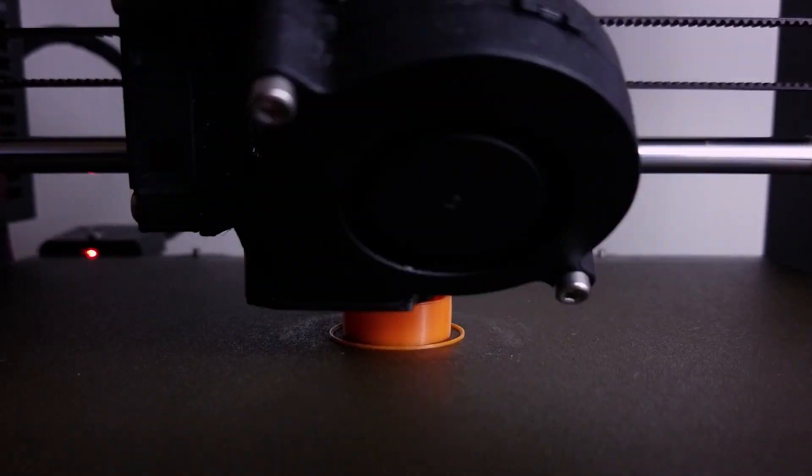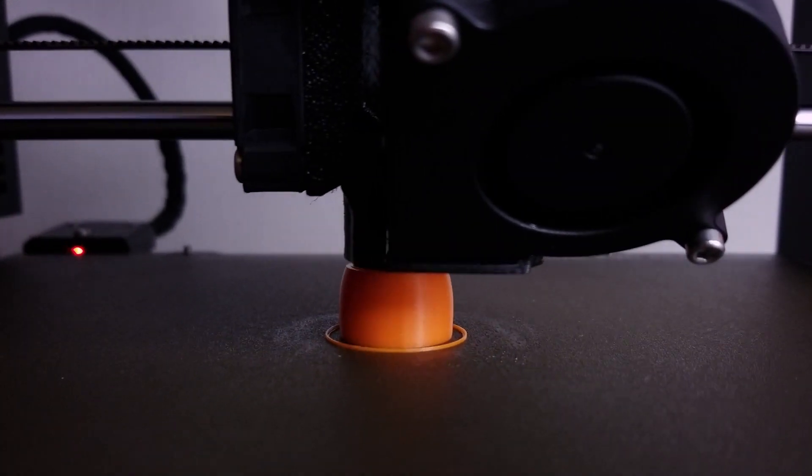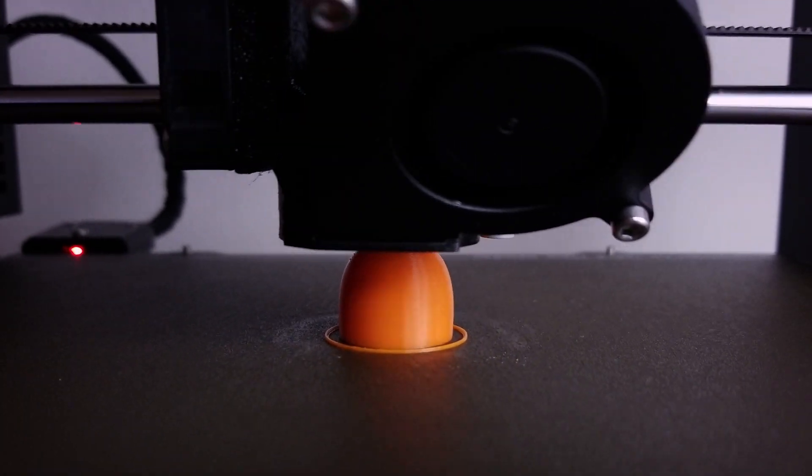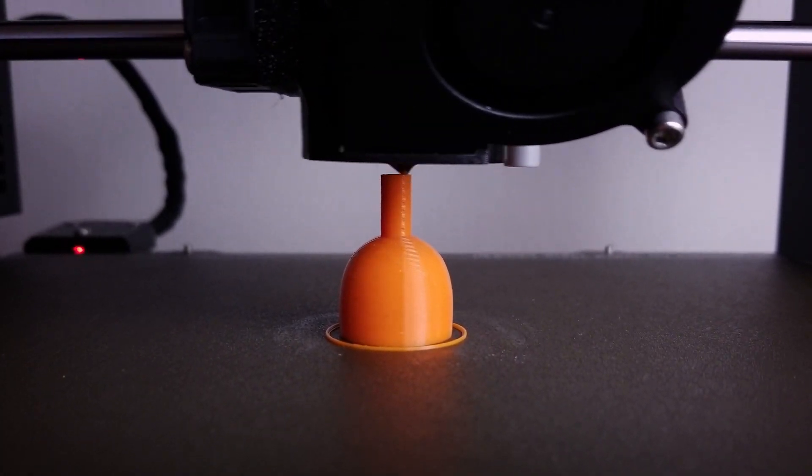This is how it works. The filament is fed from the spool, melted and deposited layer by layer until the whole object is built from bottom to top.